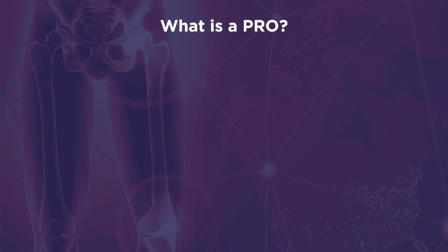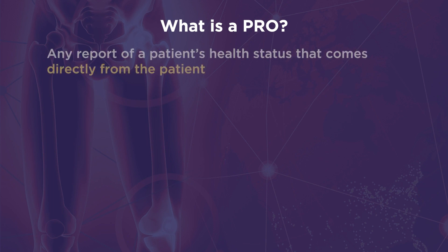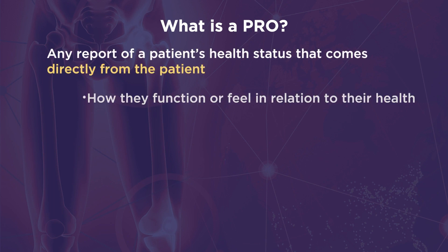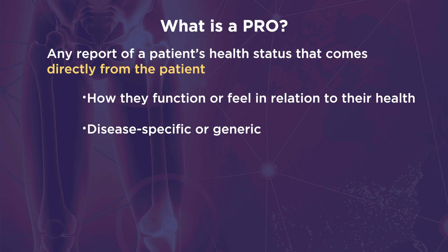A patient-reported outcome, or PRO, is any report of a patient's health status that comes directly from the patient about how they function or feel in relation to a health condition and its therapy, without interpretation by a clinician or anyone else. PROs can be disease-specific or generic. They can be used in clinical studies to measure the effects of a medical intervention or changes in health status.